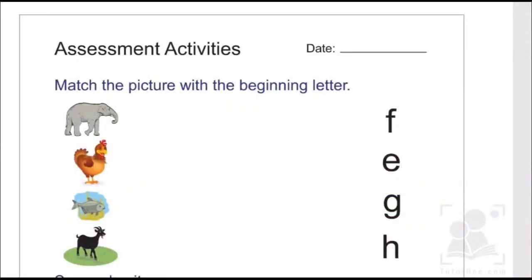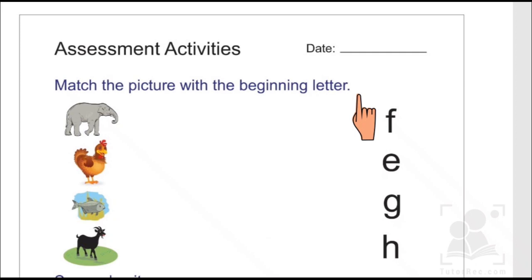Hi kids! In today's video we are going to have another fun-based assessment activity based on the next four alphabets: E, F, G, and H. So let's begin with today's exercise. In today's activity we have to match given pictures with their beginning letters. We have been given four different pictures and four alphabets to be matched.